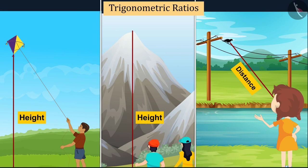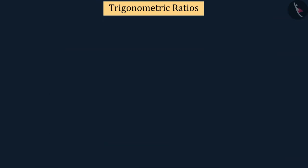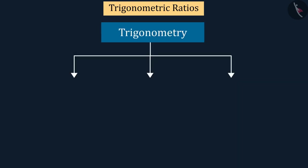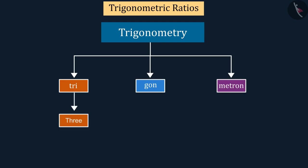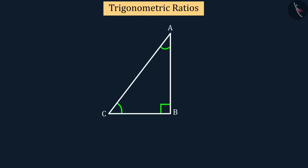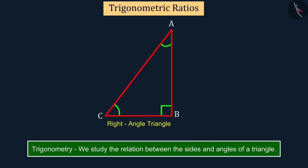These heights and distances can be found with the help of a mathematical technique which is a branch of mathematics called trigonometry. The word trigonometry originated from three Greek words: tri, gon, and metron, in which tri means three, gon means side, and metron means measure. In fact, in trigonometry we study the relation between the sides and angles of a triangle.